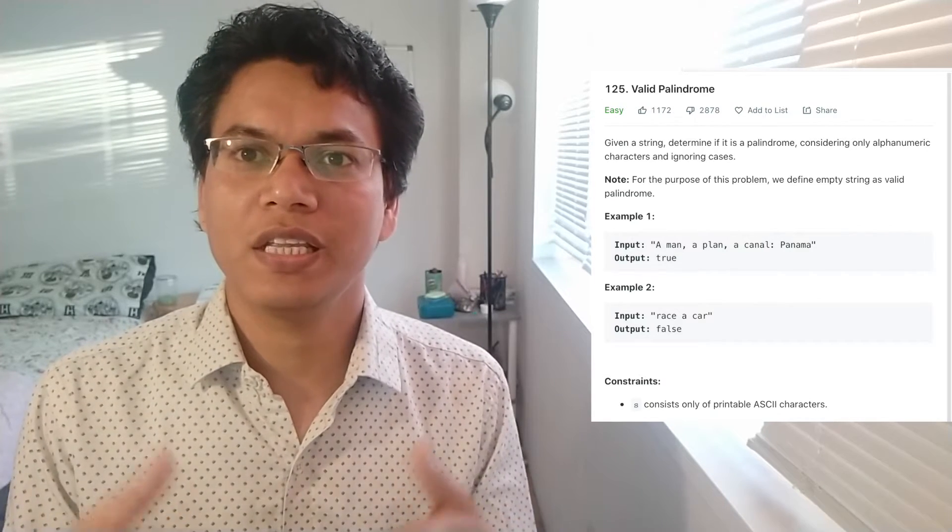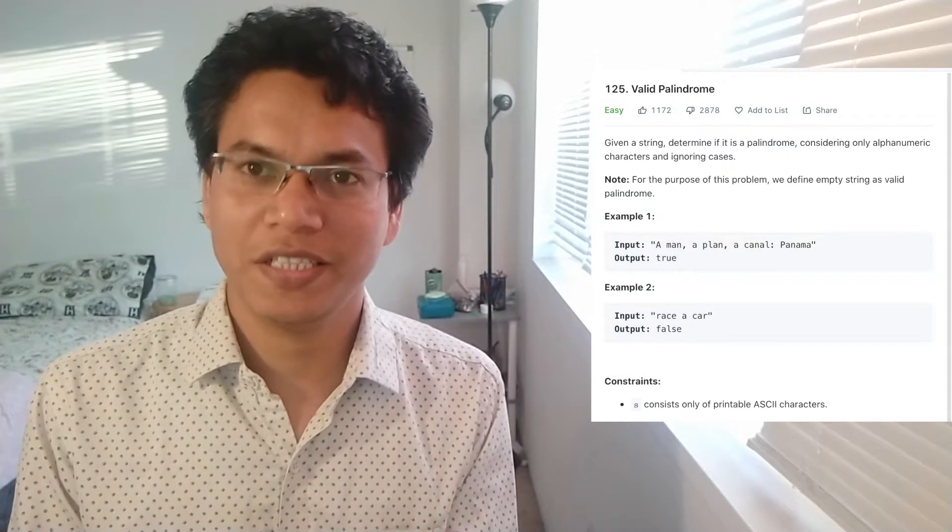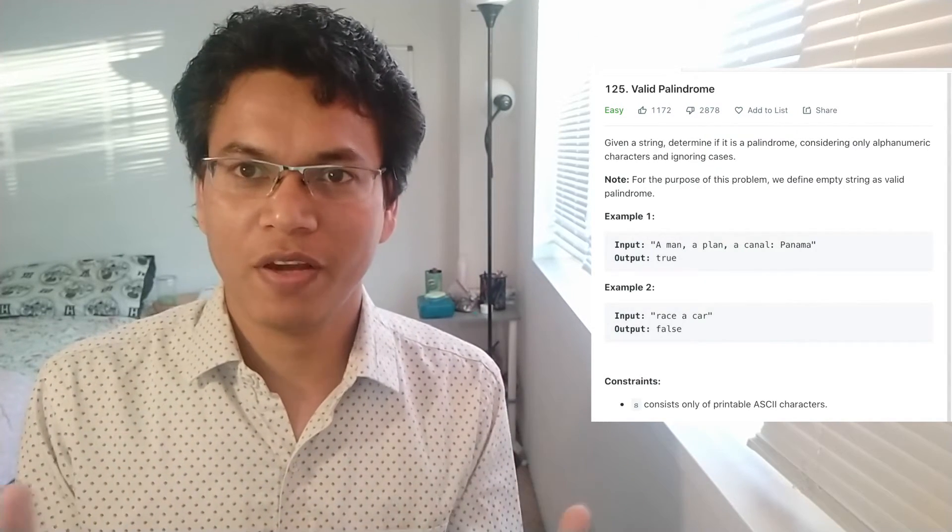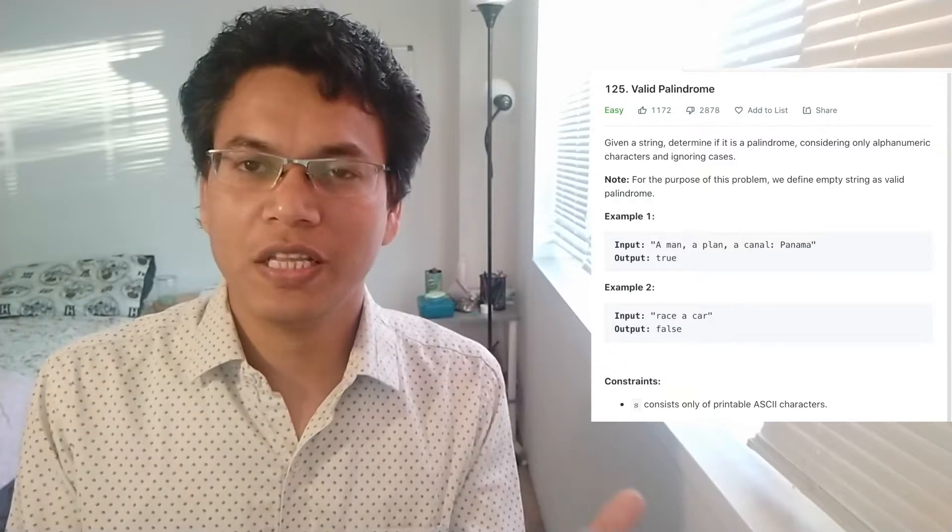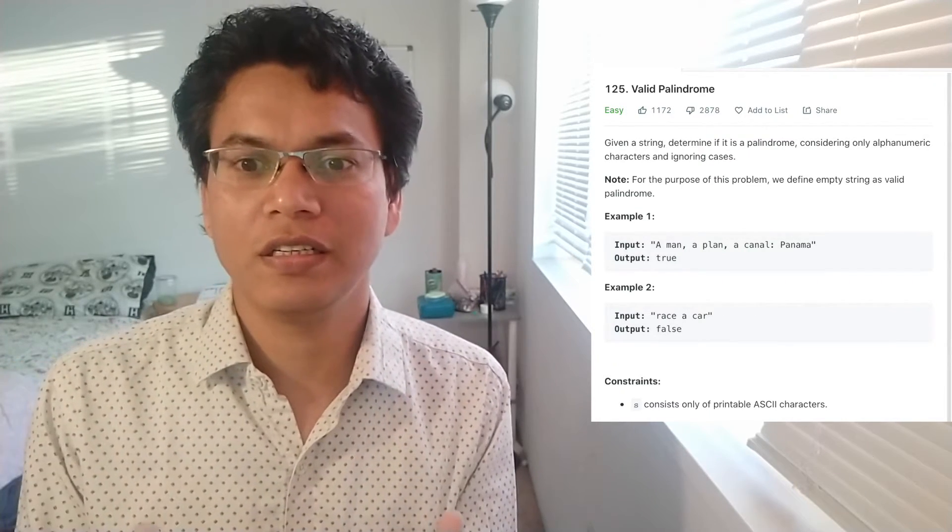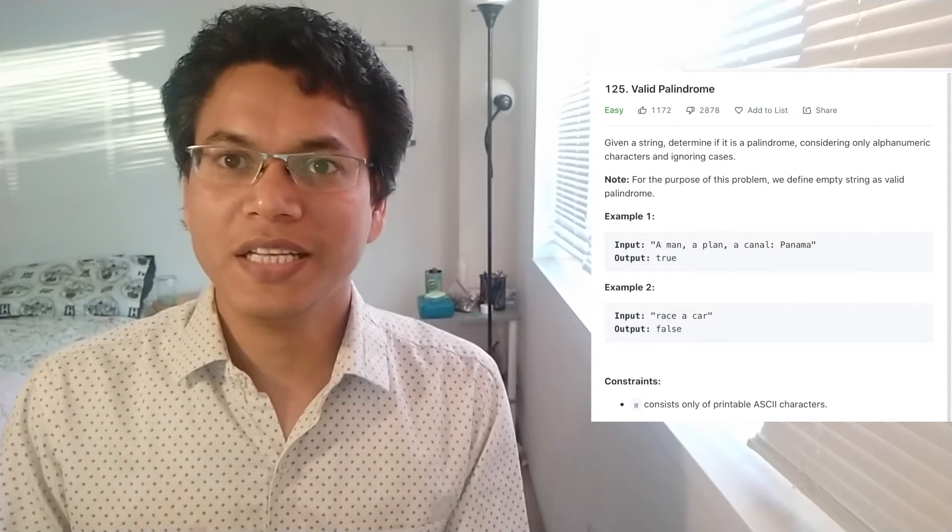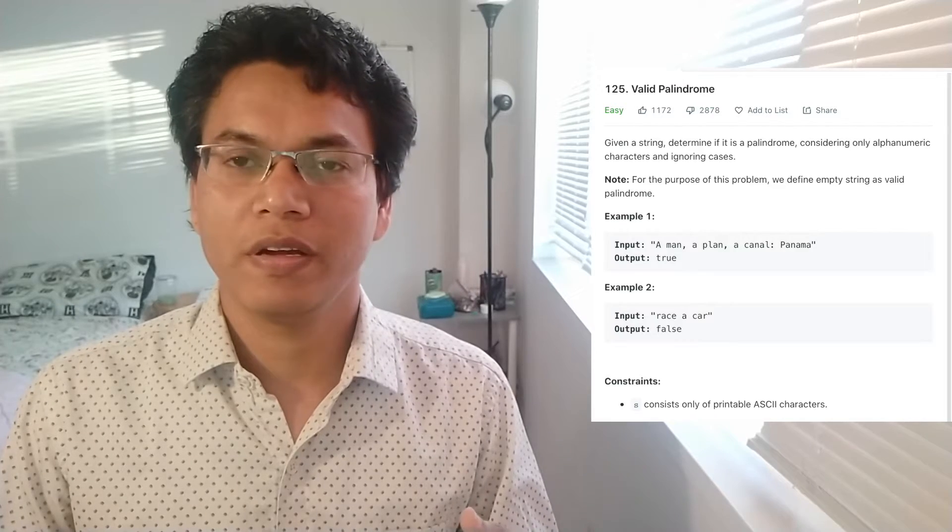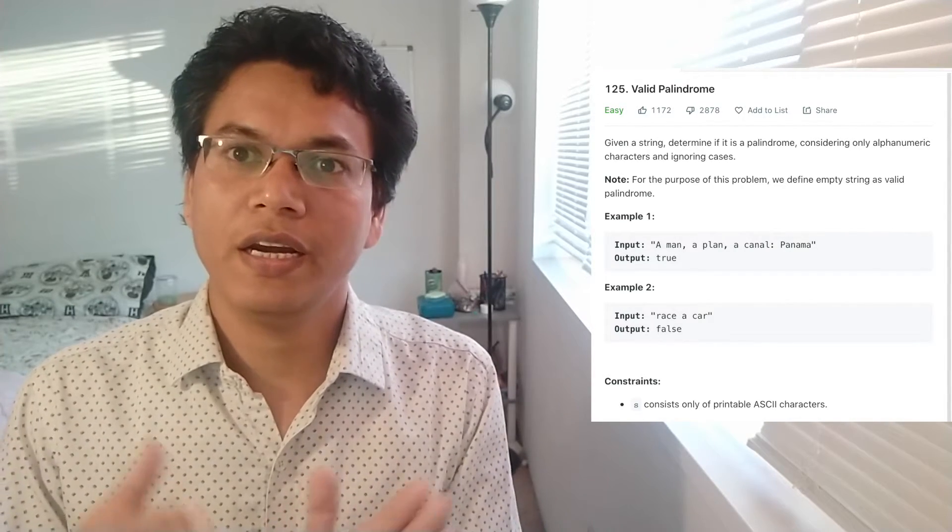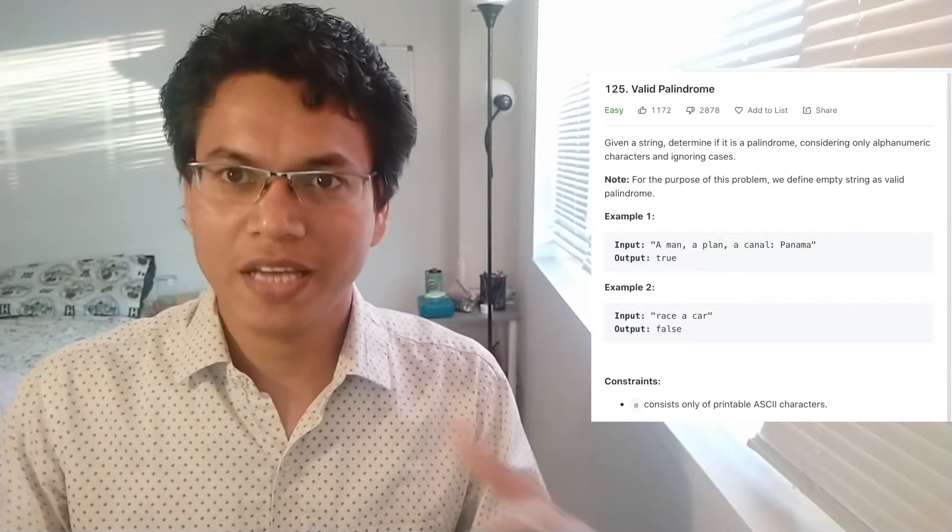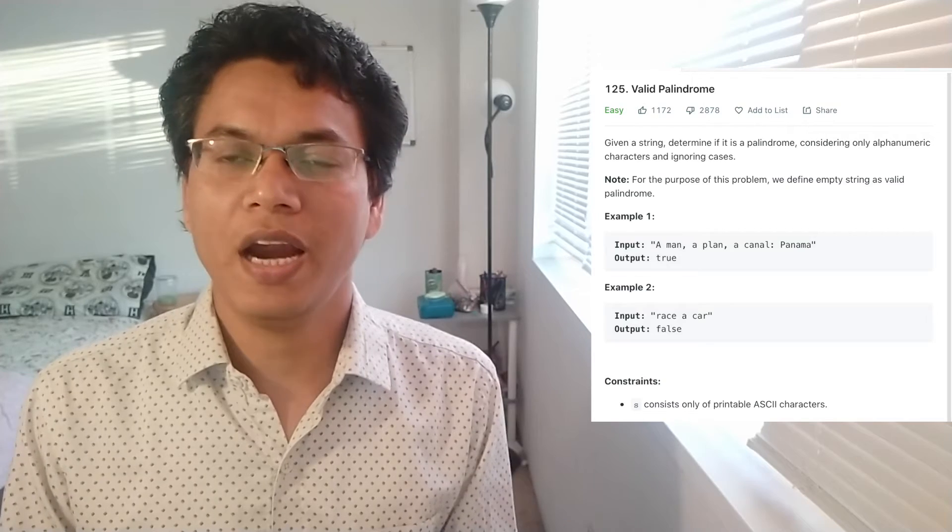First step: we will be checking whether the character is a letter or a digit. Then we just have to ignore them. So if it is not an alphanumeric character, which is nothing but it is a digit or a letter, then we have to skip them. That's the first step. In the second step, we have to transform this character into one case. It can be uppercase or lowercase character. So normalize them first, and then compare them. If they are not matching, we can immediately say that it's not a palindrome.